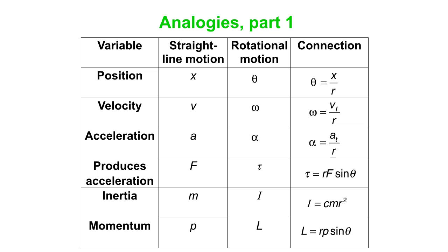For straight line motion, we might use x and v and a to represent those ideas. And in rotational motion, we have equivalents, theta, omega, and alpha. And you can see there's a connection between them. If you take x divided by the radius r, you get theta. Omega is v tangential over r. Alpha is a tangential over r.